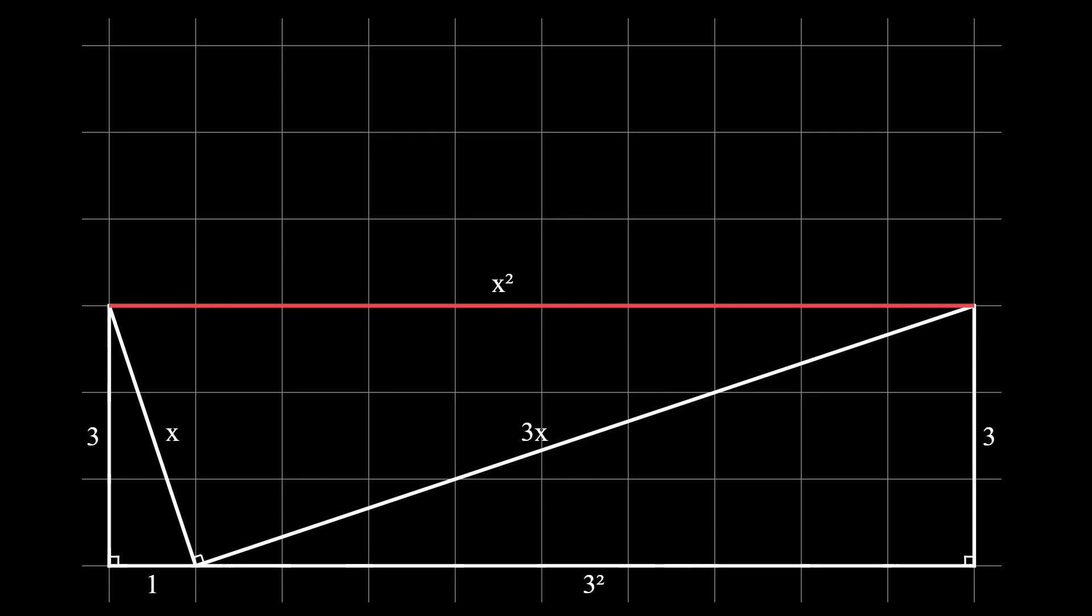The same argument works no matter what the size of the left side of the triangle is. If we choose any integer or positive real number and call it y, this same proof will show that x squared is equal to 1 plus y squared.